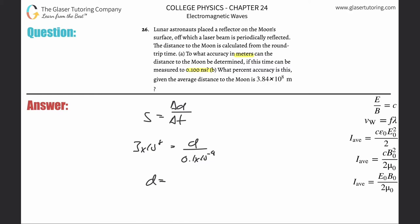So 3 times 10 to the 8 times 0.1 times 10 to the minus 9th. So that's going to be about 0.03. So here we have now about 0.03 meters.